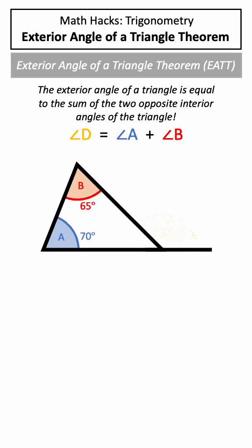So say we are given this problem and asked to solve for angle D. Well, angle D is just the sum of angle A and angle B, which is 135 degrees.